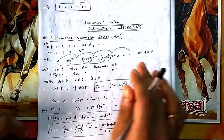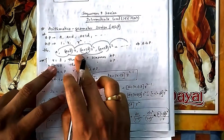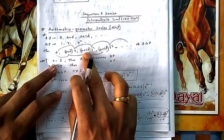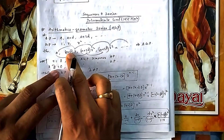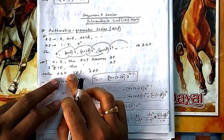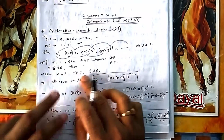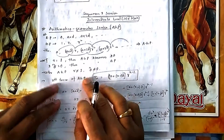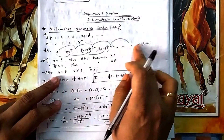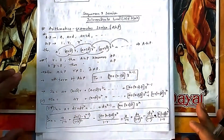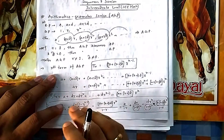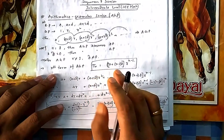If r = 1, the AGP becomes a simple AP: a+d, a+2d, a+3d. If d = 0, it becomes a GP: a, ar, ar². For AGP, we consider r ≠ 1 and d ≠ 0, because if either condition fails, we already have formulas for AP or GP respectively.